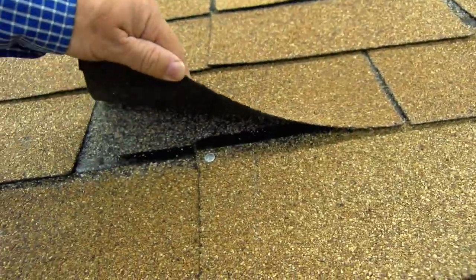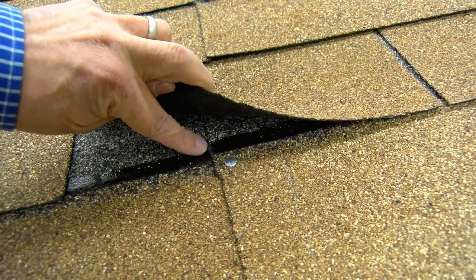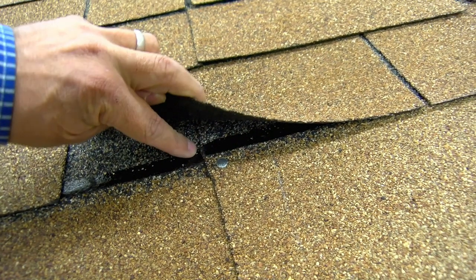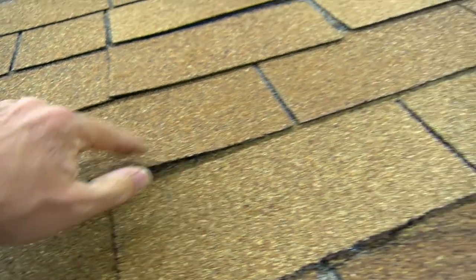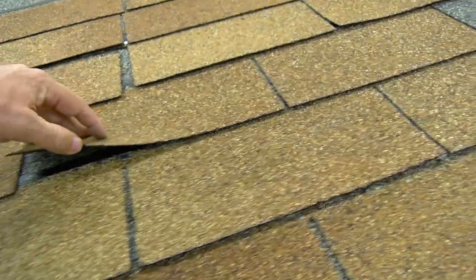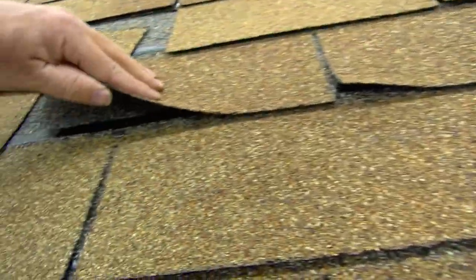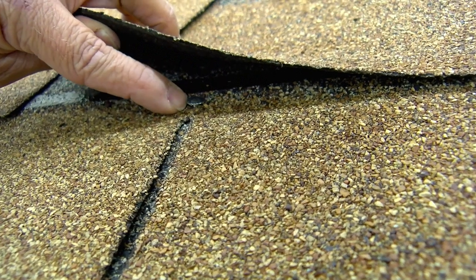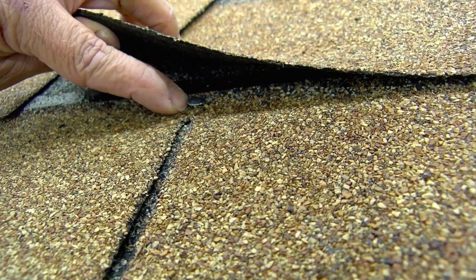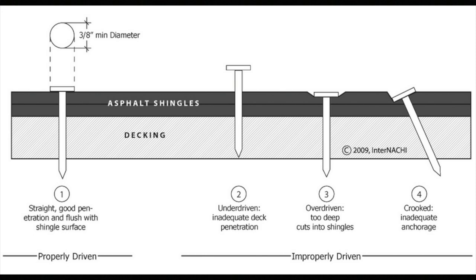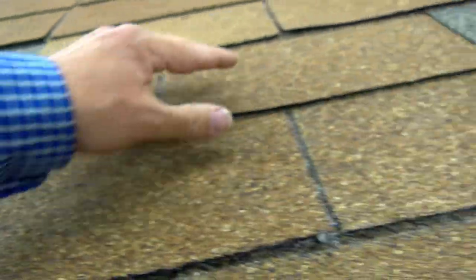There's a fastener there, but the ends of the shingle tabs are overlapping each other — that's a defect. There's a fastener there but it's not snug and tight — it's lifted up. You want a good straight penetration, flush with the surface of the shingle. You don't want it under-driven or over-driven, which cuts into the shingle, and you don't want it at an angle either.